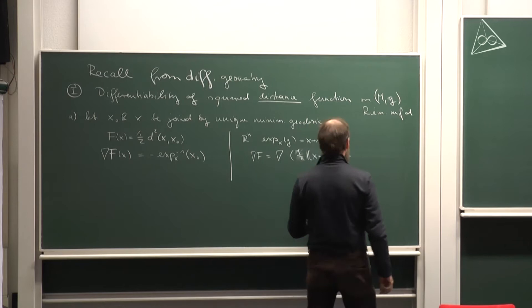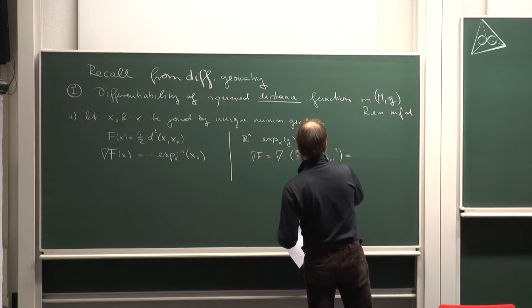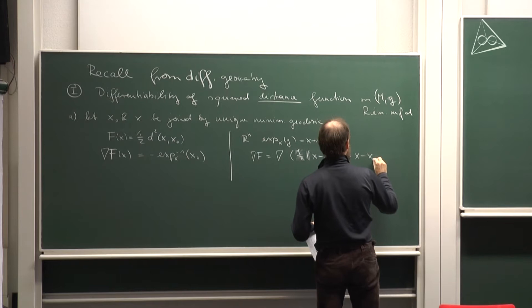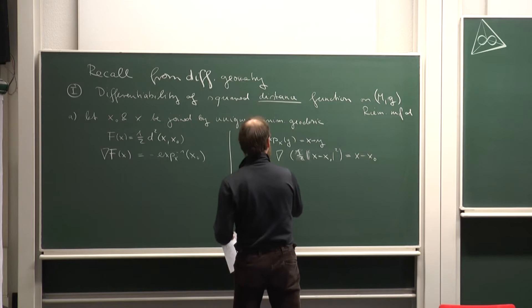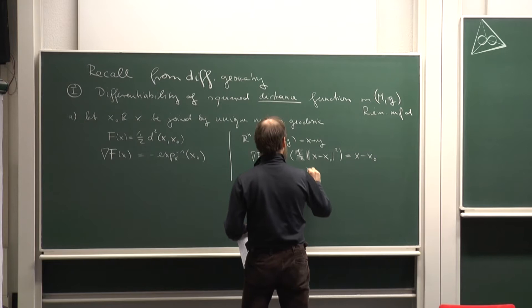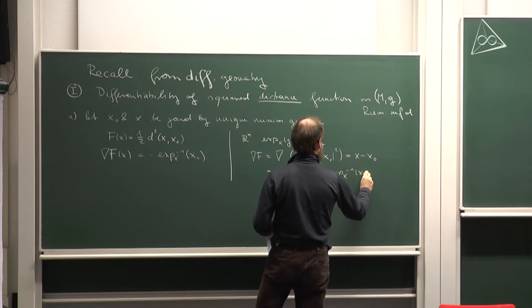You don't need to remember the formula; you just should know that this function is differentiable. It's exactly what you have in ℝⁿ: the exponential at x of y is x plus y, and indeed the gradient of f, which is the gradient of ½|x − y|², equals x − x₀, which is minus the exponential at x of x₀.